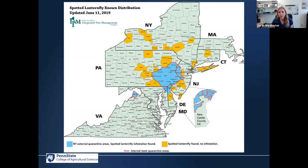The other important piece of information on this map is the red lines. Anywhere you see a red line indicates a current regulatory quarantine associated with this insect. There are regulatory implications dependent on the state for what that quarantine really means, and we'll talk in more detail about quarantine information as we go on.